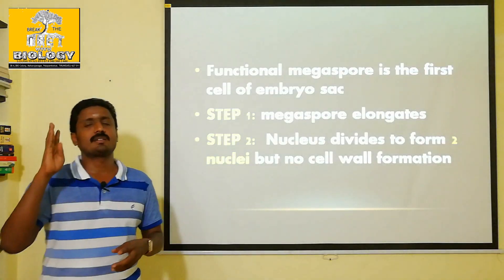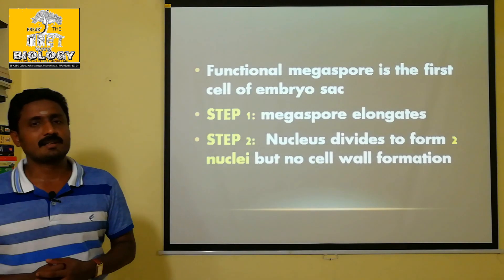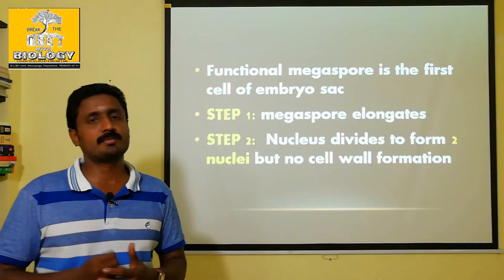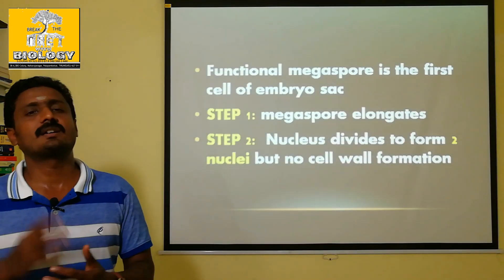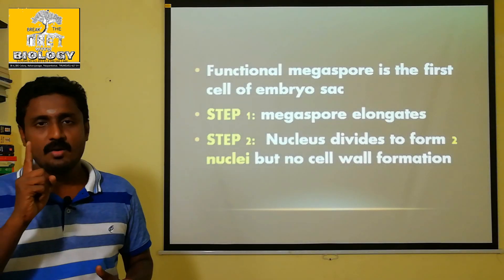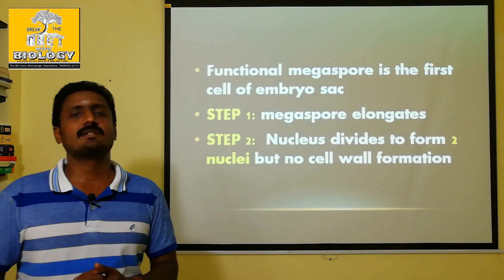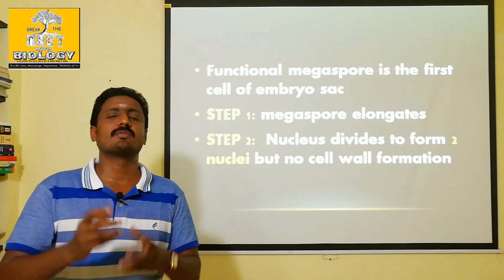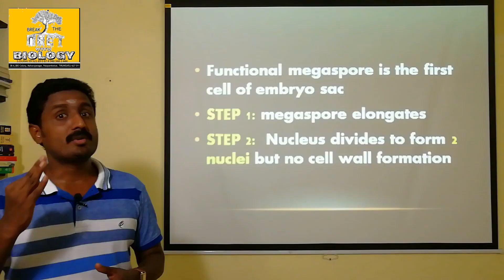We already know that in the 4 cells formed during Megasporogenesis, we will develop 1 functional megaspore. 3 megaspores disintegrate.